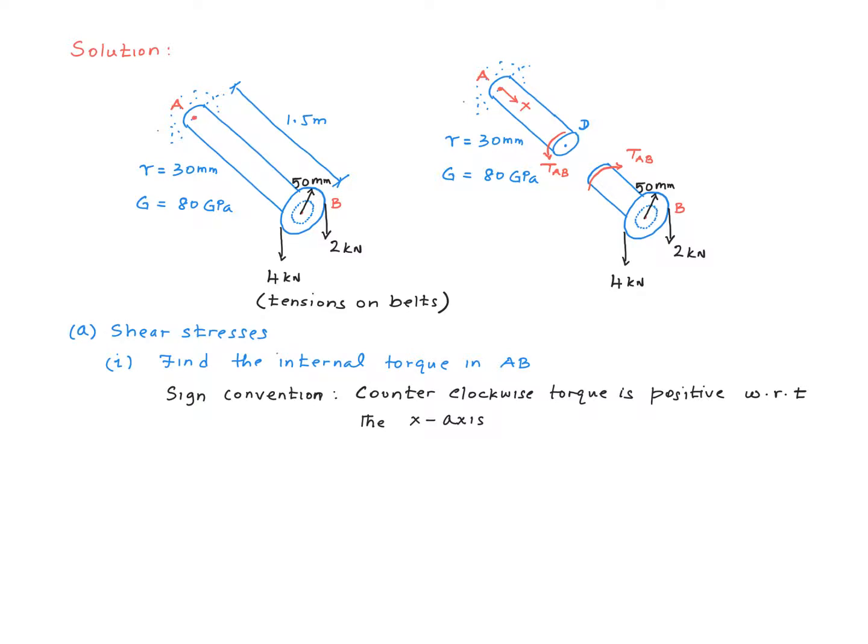You don't need to do that if you were to consider the right side. Let's go ahead and mark the internal torque as TAB. It's good to have a sign convention even though we have a simple shaft. This will allow us to know the directions of the shear stress and the angle of twist unambiguously once calculated. Of course, the sign conventions are a lot more important when you have a segmented shaft. Here, this is the sign convention that I have selected. A counterclockwise torque with respect to this x-axis is positive. In other words, you can use the right hand rule to figure this out.